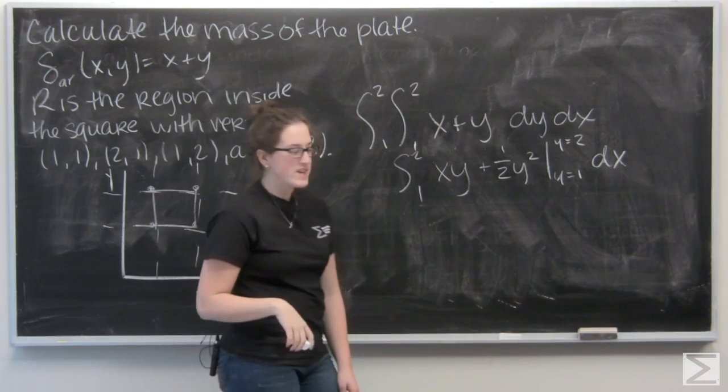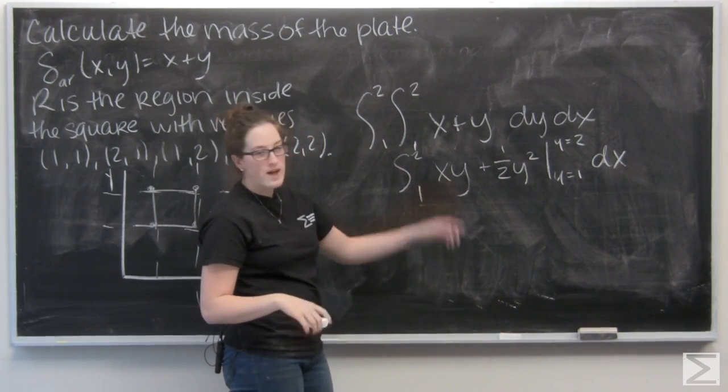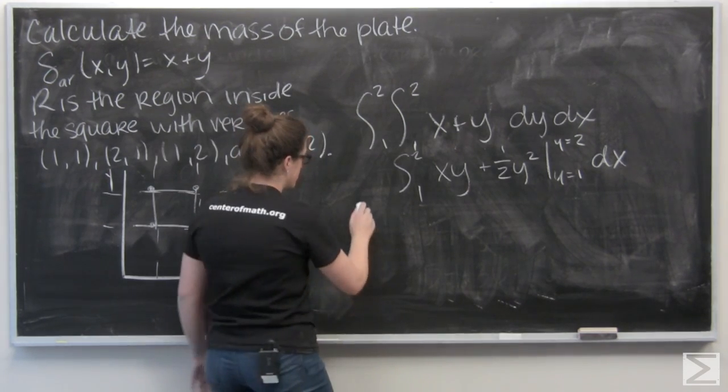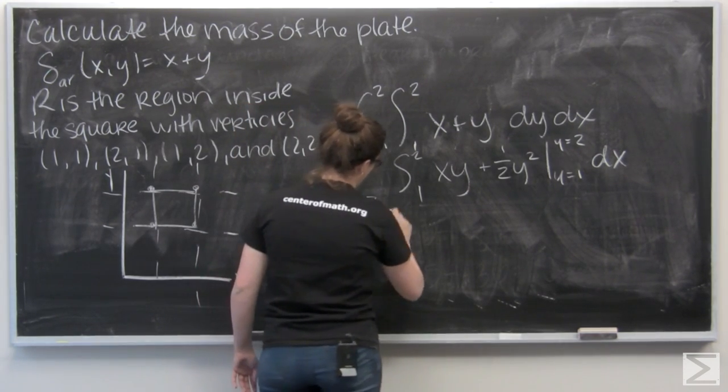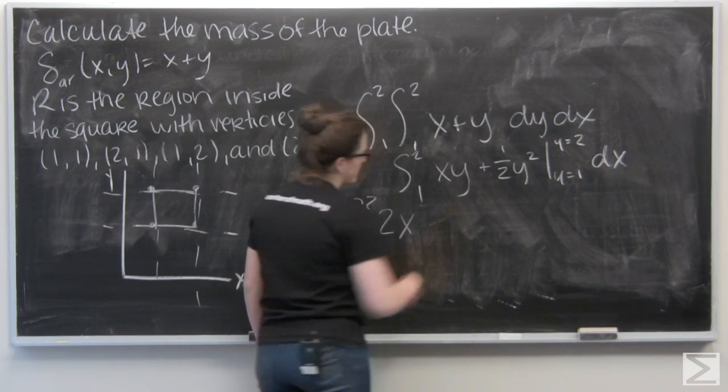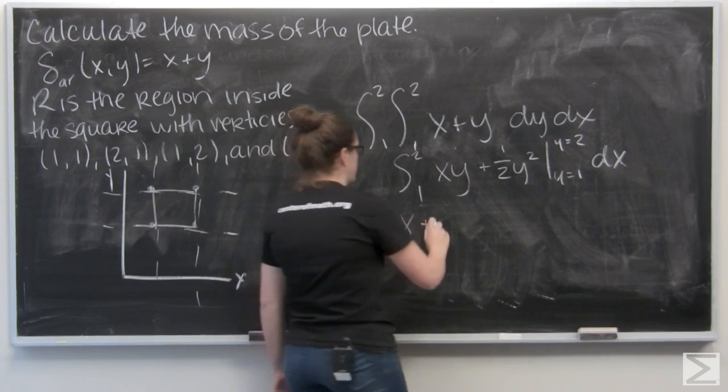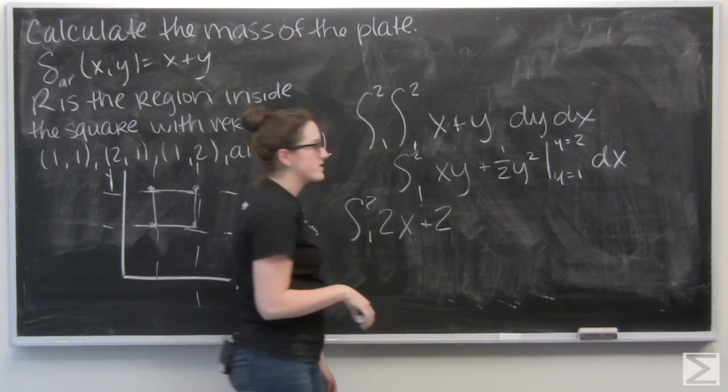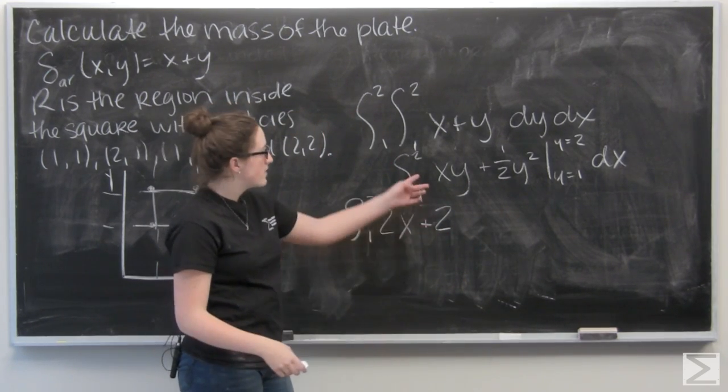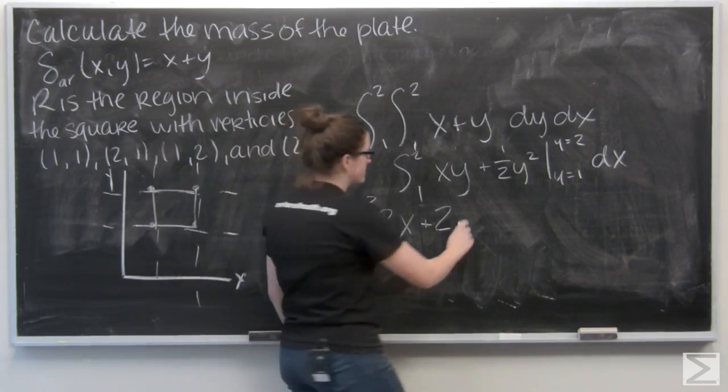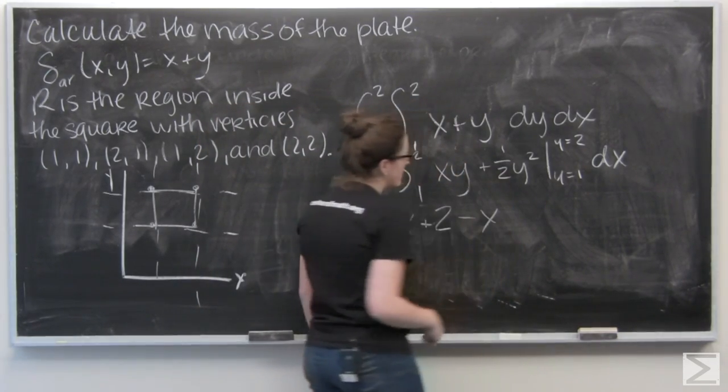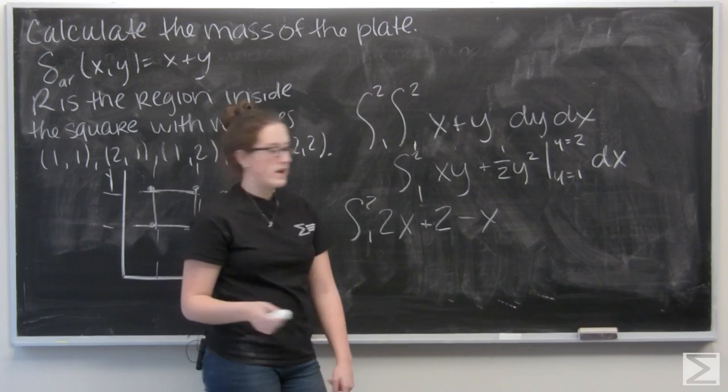So let me start off by plugging in 2. So xy is going to give me 2x, and one-half y squared is going to give me one-half of 4, so 2. Now let's subtract from when y equals 1. So xy gives me 1x, and one-half y squared gives me one-half.